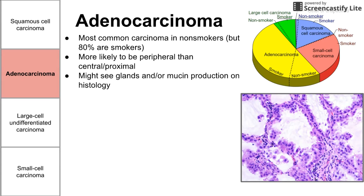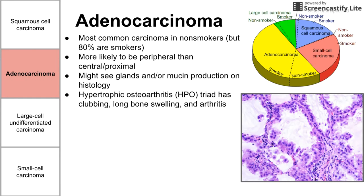Adeno means gland, so you might see glands on the histology. It's also common to see mucin production — mucin is produced by the glands, so you might see both of those. There is a triad that is pretty characteristic of adenocarcinoma: three symptoms that are characteristic of adenocarcinoma. That is clubbing, long bone swelling, and arthritis.